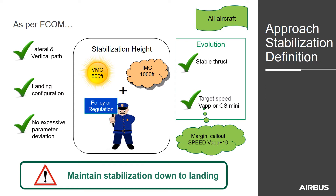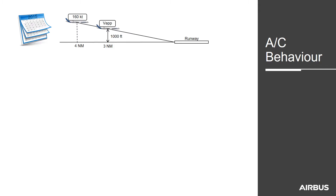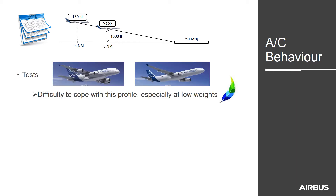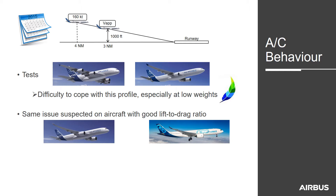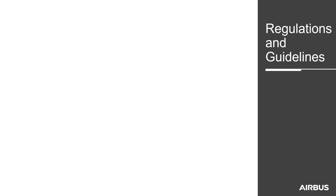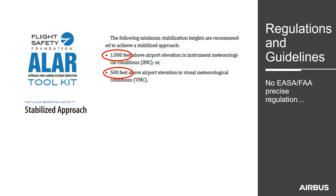A key parameter is that you have to maintain stabilisation down to the landing. When we analysed the requirement of 160 knots up to 4 miles final, tests were done with different aircraft and we saw it can be difficult to comply with this profile, especially at low weight. We will have the same issue on aircraft with a good lift-to-drag ratio. This led to requests from operators to allow later speed and thrust stabilisation to avoid unnecessary go-arounds. In EASA or FAA regulations, we could not find any precise regulation, but documents from the ALAR toolkit and briefing notes have given the 1000 feet IMC and 500 feet VMC criteria.